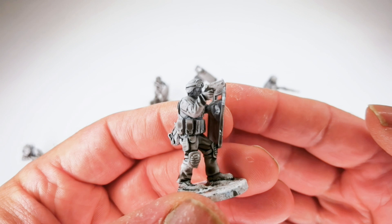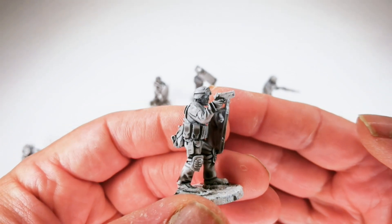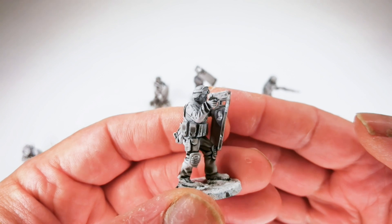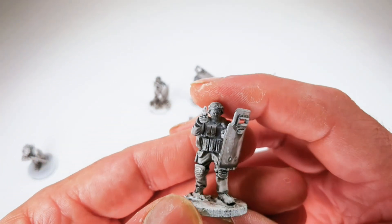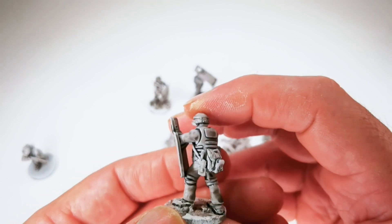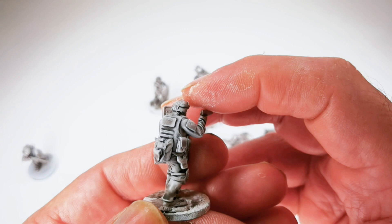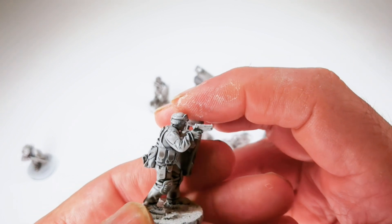There you can see these have been undercoated with white matte spray and then a wash of black to bring out the detail. And there you can start to see some of the detail on these figures.